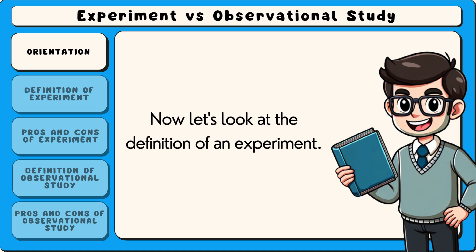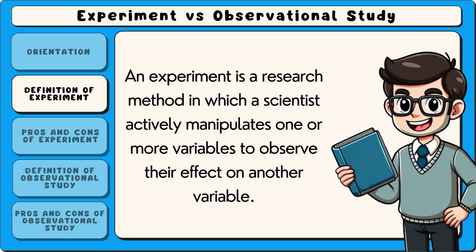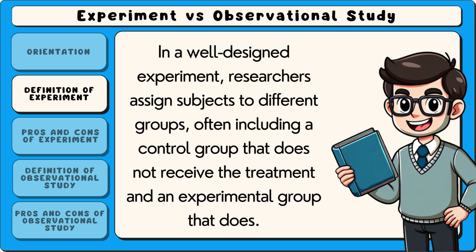Now let's look at the definition of an experiment. An experiment is a research method in which a scientist actively manipulates one or more variables to observe their effect on another variable. In a well-designed experiment, researchers assign subjects to different groups, often including a control group that does not receive the treatment, and an experimental group that does.